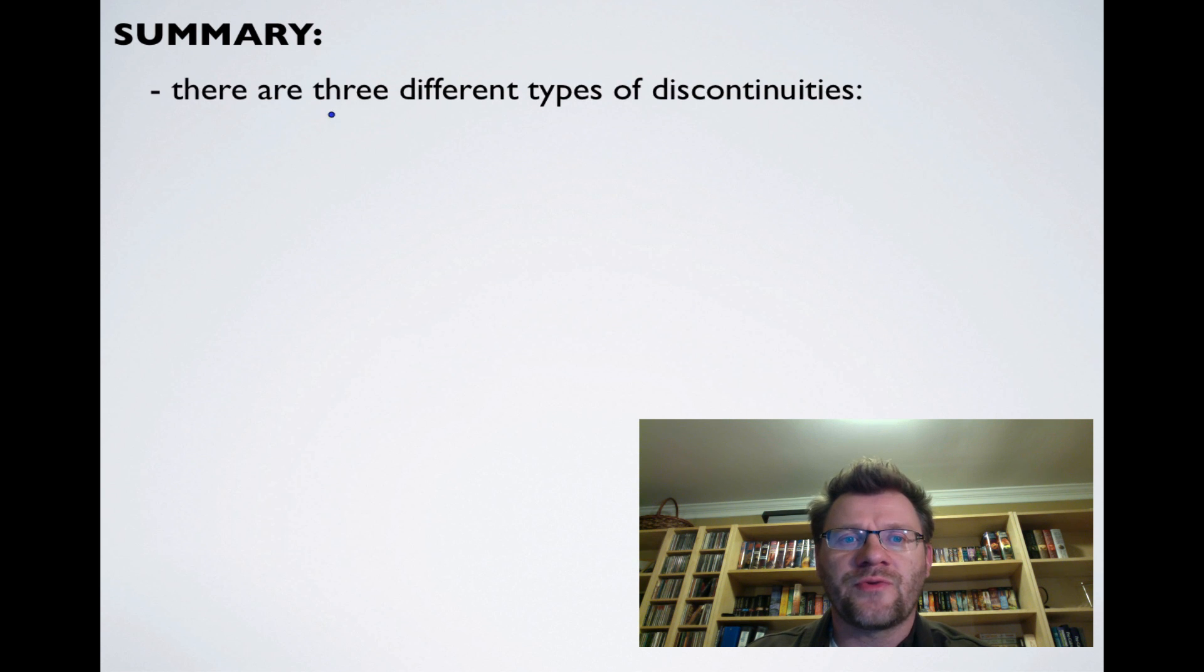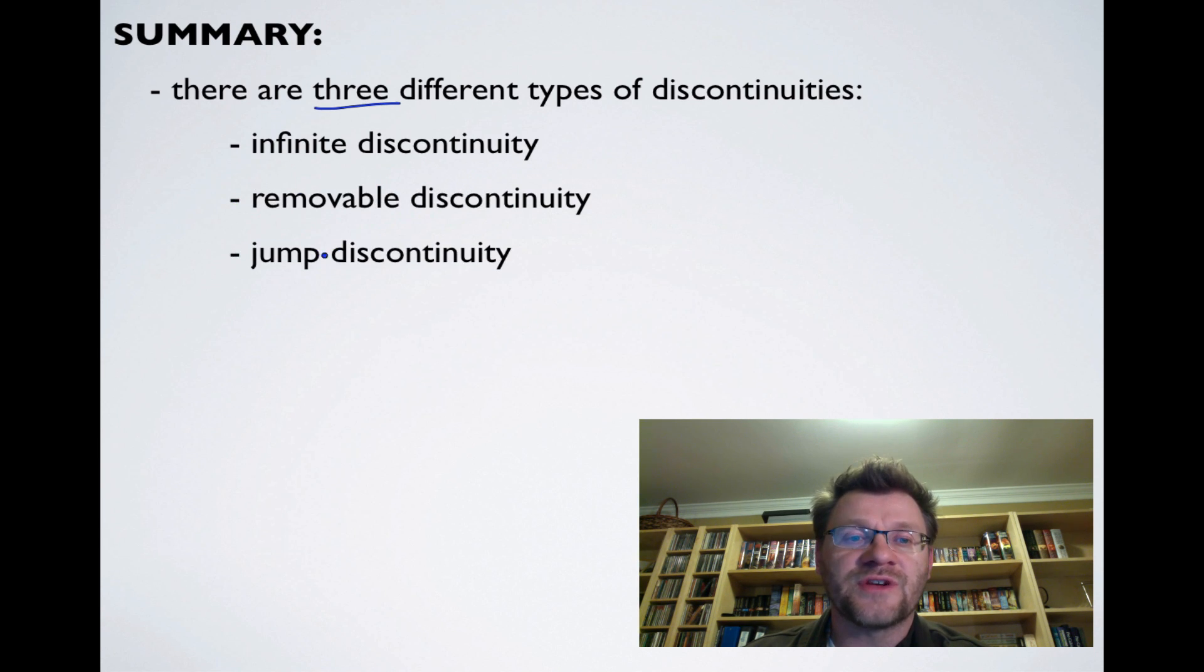So in summary, there are three different types of discontinuities. There's an infinite discontinuity, which we know is a vertical asymptote. There's a removable discontinuity, which we know as a hole. And there's a jump discontinuity, and that's when the height of a function may jump up or down.